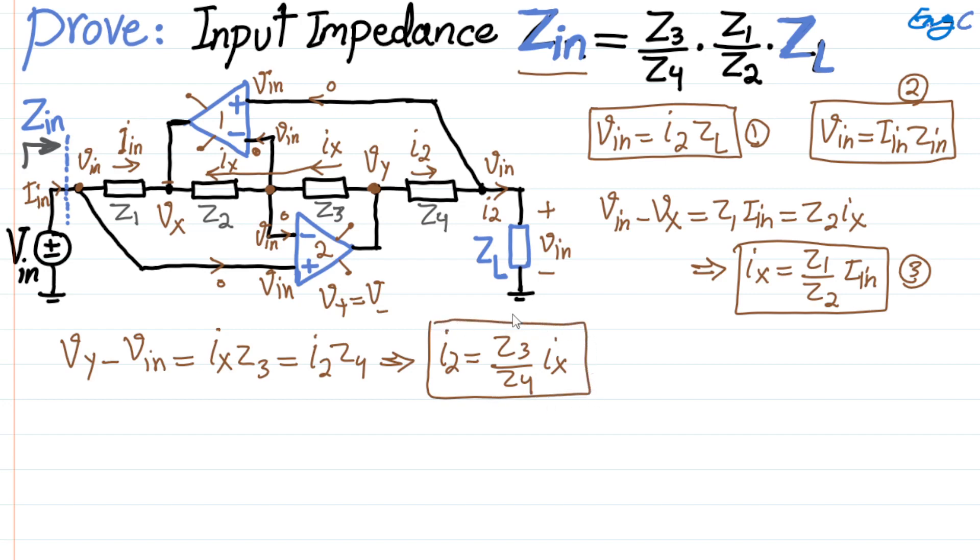I can just write that I2 is equal to Z3 divided by Z4 times Ix. This is equation number 4, and combining 3 and 4, we get I2 equal to Z3 divided by Z4 times Z1 divided by Z2 times Iin. So times Iin, and this is equation number 5.